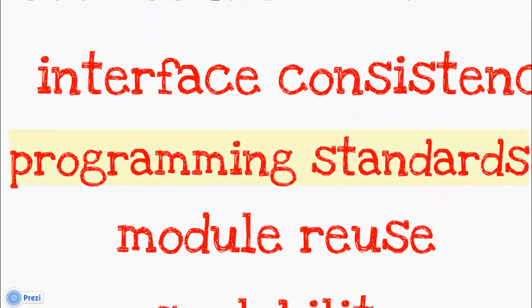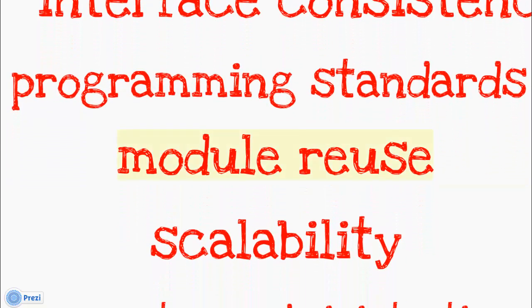2. Programming Standards — Documentation standards and data naming standards should be established early in RAD, or it may be difficult to implement them later. 3. Module Use — Analysts forget that similar screen or report designs may have already been created.